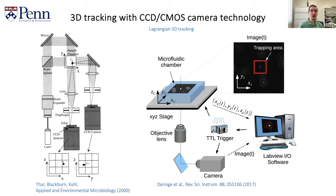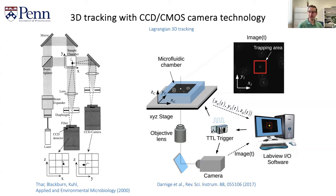Another way of tracking bacteria is using Lagrangian 3D tracking. What you would do here is follow a bacterium with a single camera and move your stage left, right, and up or down with an electronic feedback system — for example, a piezo stage. If your bacterium swims a little bit to the right, you pick that motion up with your camera, send a signal to your computer, and then move the stage so the bacterium comes back to the center. With a very careful feedback system, you can follow a cell in three dimensions that way.